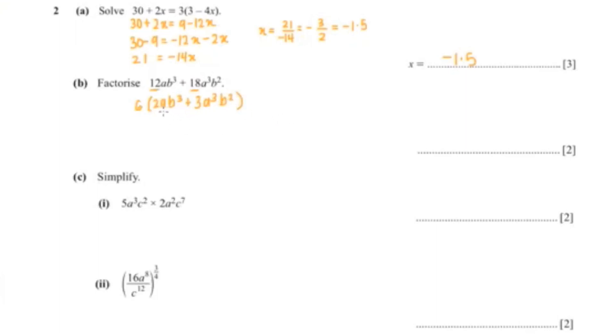Now a is in common and b squared is in common, so we can factorize ab squared out. That's ab squared bracket 2b plus 3a squared. So our final answer is 6ab squared, bracket 2b plus 3a squared.